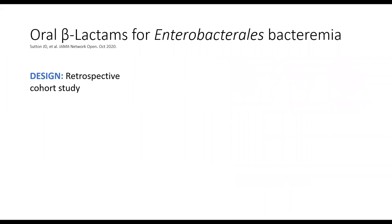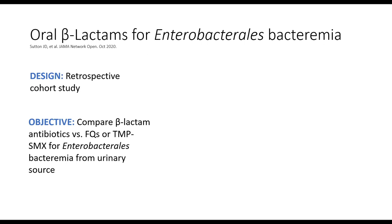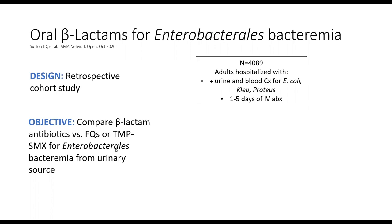This retrospective cohort study sought to compare beta-lactams with highly bioavailable antibiotics such as fluoroquinolones and bactrim for GNR bacteremia from a urinary source. They looked at 4,000 adults hospitalized with positive urine and blood cultures for E. coli, Klebsiella, and Proteus, who had been on one to five days of IV antibiotics, and excluded anybody who might have required longer duration—such as those with polymicrobial bloodstream infections, abscess, or prostatitis.